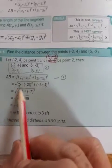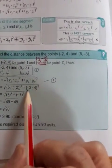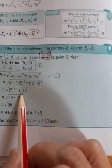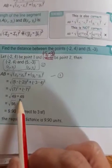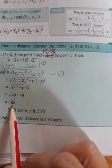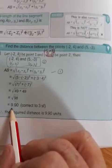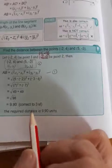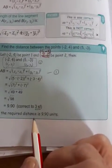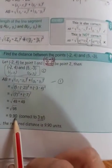Now if we calculate that first lot, then we get 7. And if we calculate the second lot here, we get negative 7. And if you put that into your calculator, it gives you the square root of 49 plus 49, which is 98. And if you calculate that on your calculator, it gives you an answer of 9.90, which is rounded correct to three significant figures. So the distance between these two points is 9.90.